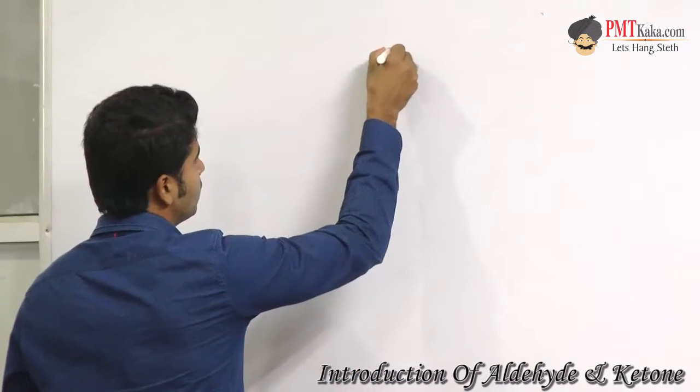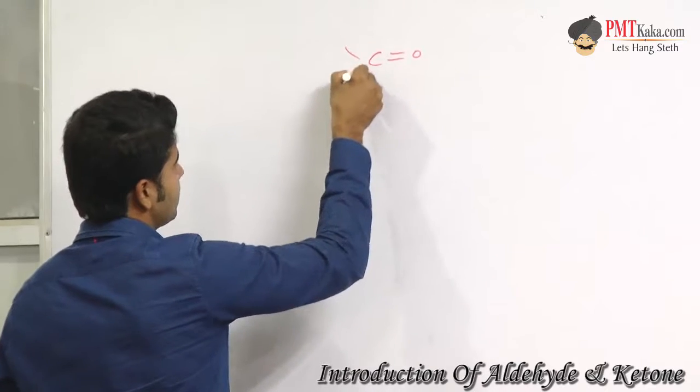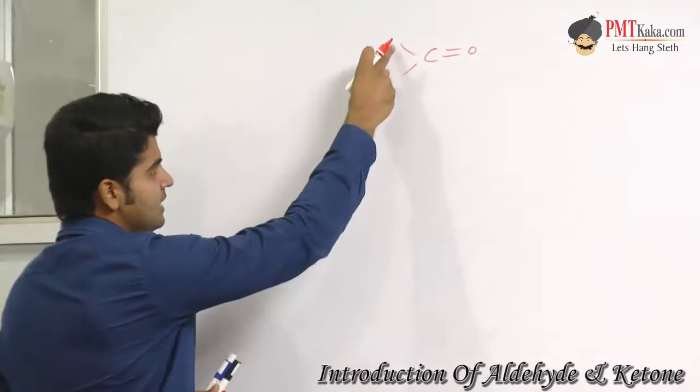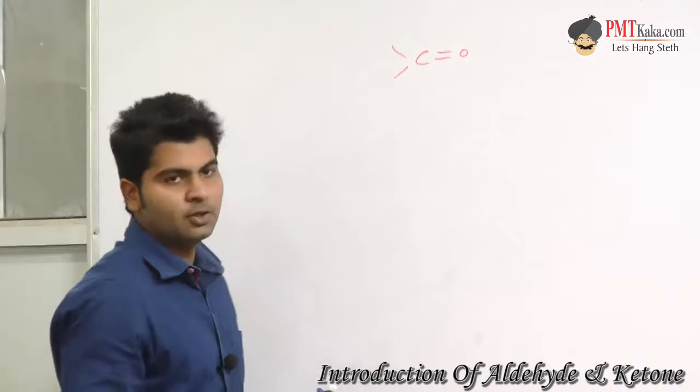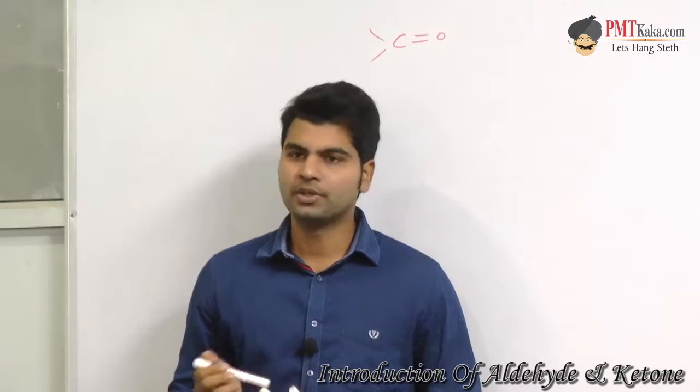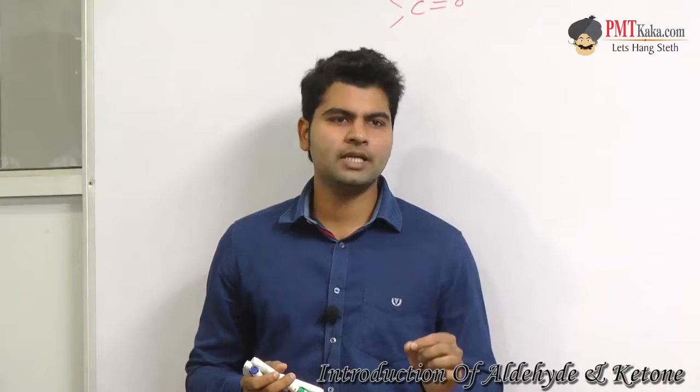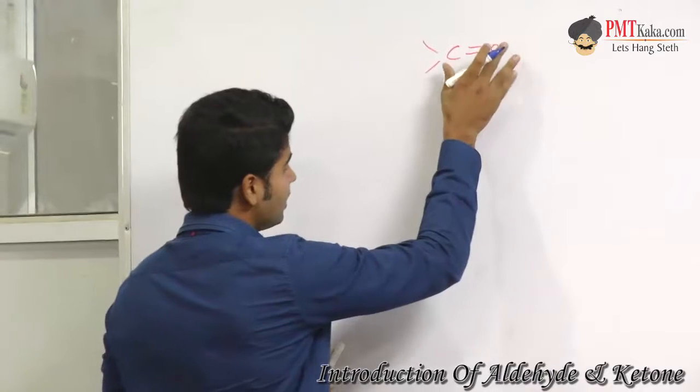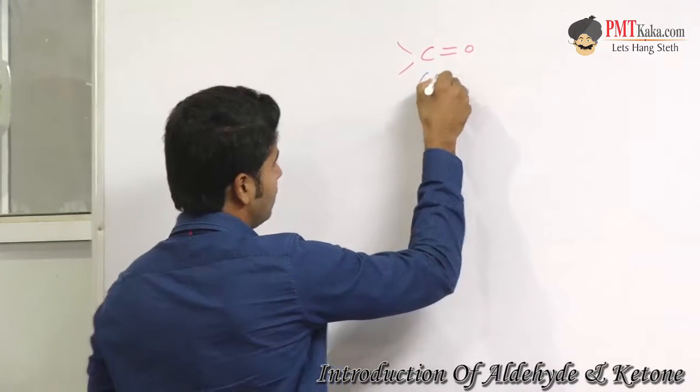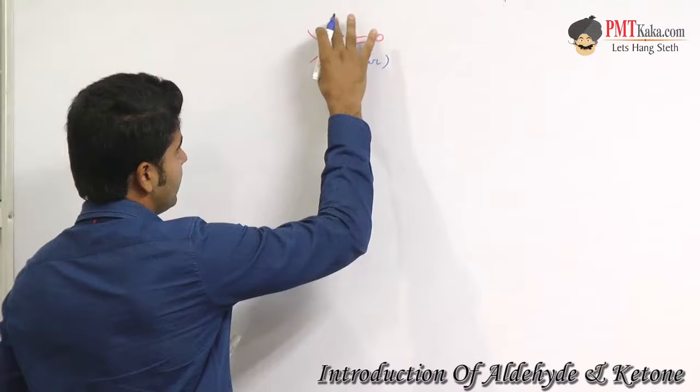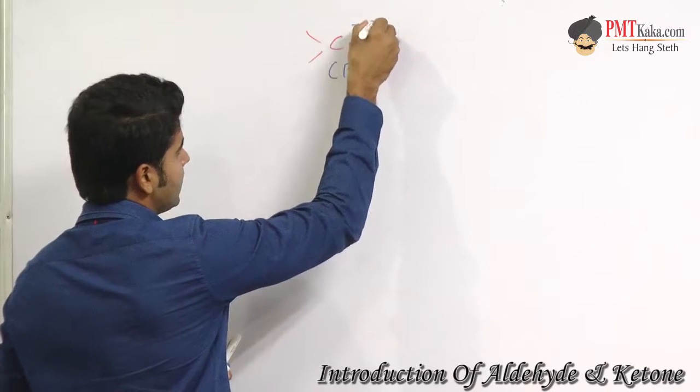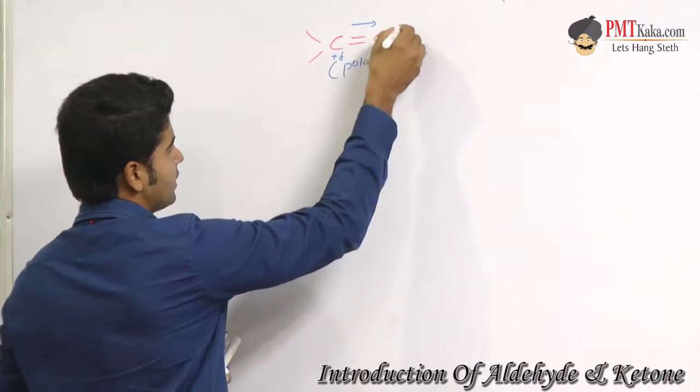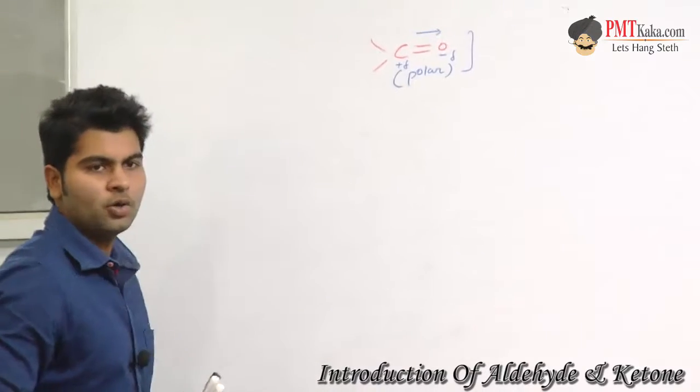This bond is present. If you have satisfied valency, this bond is polar. Electrons are attracted towards oxygen, creating partial negative and partial positive charge. This bond is C double bond O.